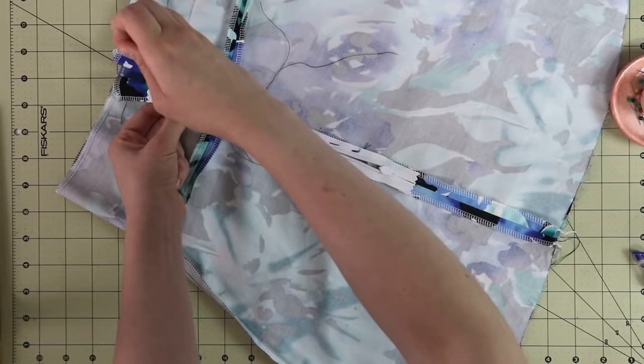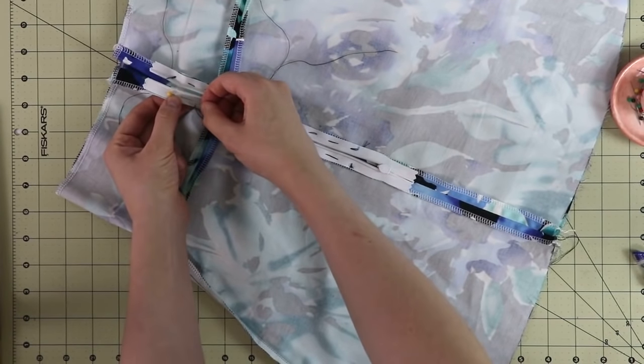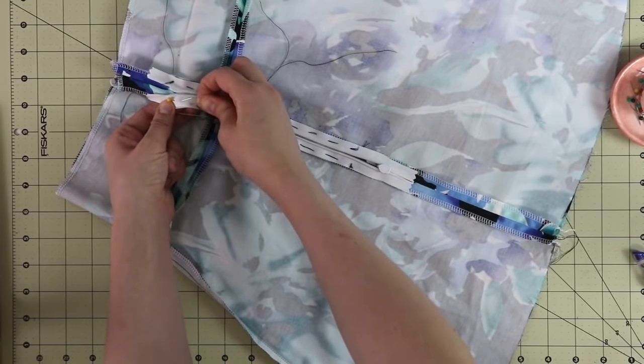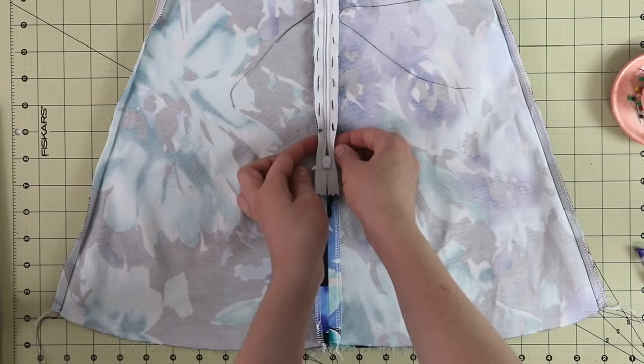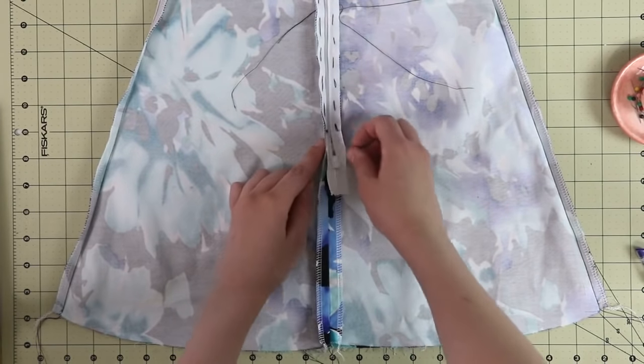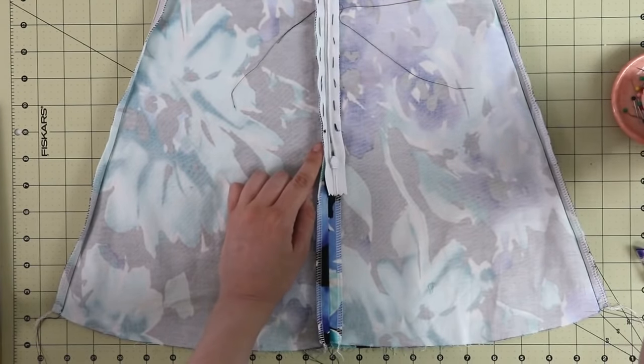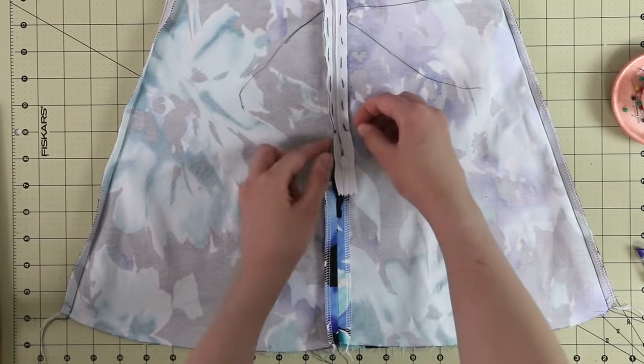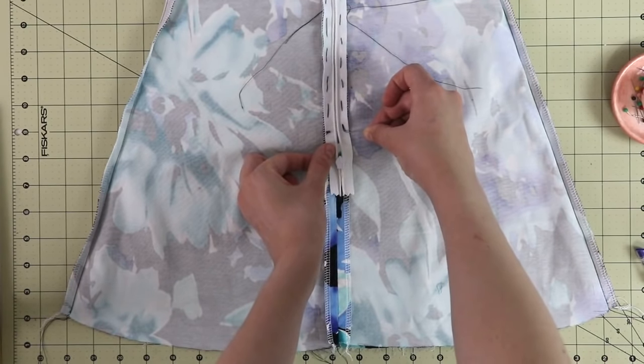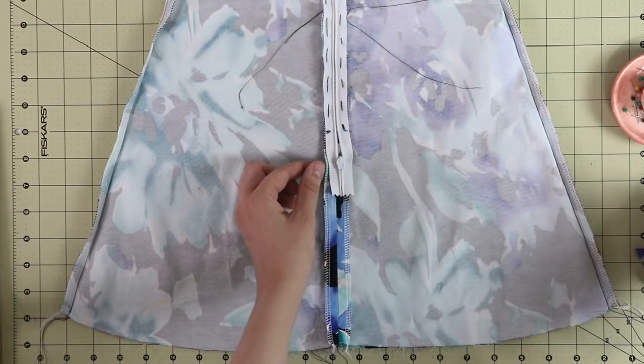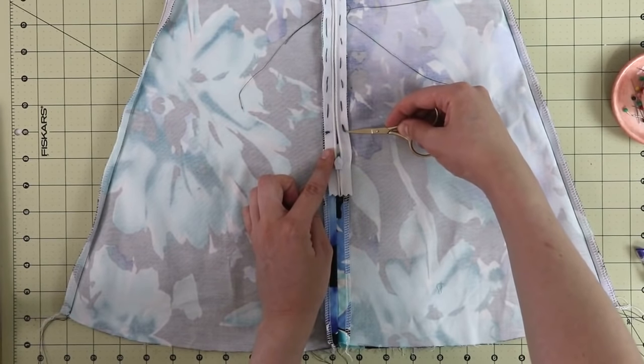Now that the zipper is hand basted all the way through from the top of the stoppers all the way to the two and a half inch mark to the center back seam, we need to secure the rest of the center back seam that is below the zipper, because remember we only did a basting stitch on our sewing machine. So we need to make sure that the rest of that seam is going to be nice and sturdy.